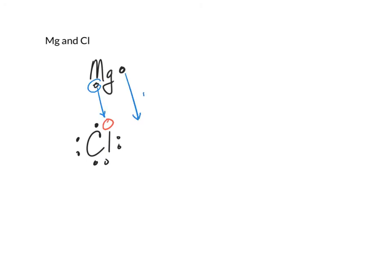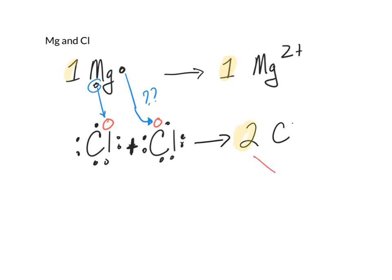Chlorine goes and finds another partner, another chlorine, that would like to take an electron so that we end up with one magnesium giving an electron to each of the chlorides. This gives us magnesium with a two plus charge and two chloride ions each with a negative charge for a total of two negative. When we put that together we get our formula of MgCl2.